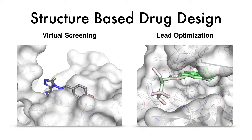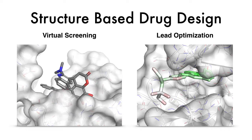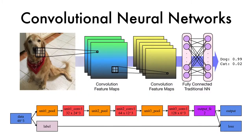Essential to this approach is a means to accurately score compound poses. We are applying deep learning, specifically convolutional neural networks, to solve the scoring problem. Convolutional neural networks have been amazingly successful at recognizing images, and we hope to do the same for molecular structures.